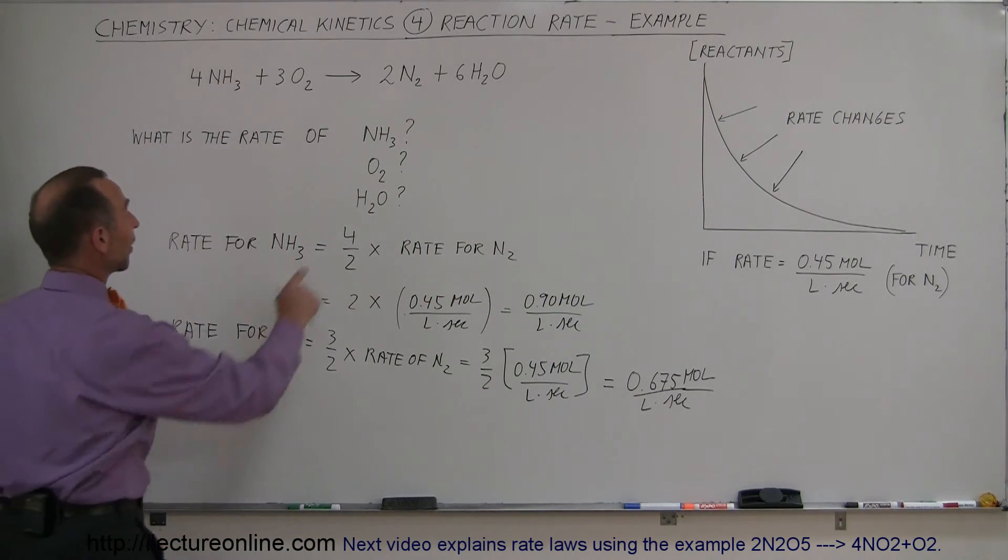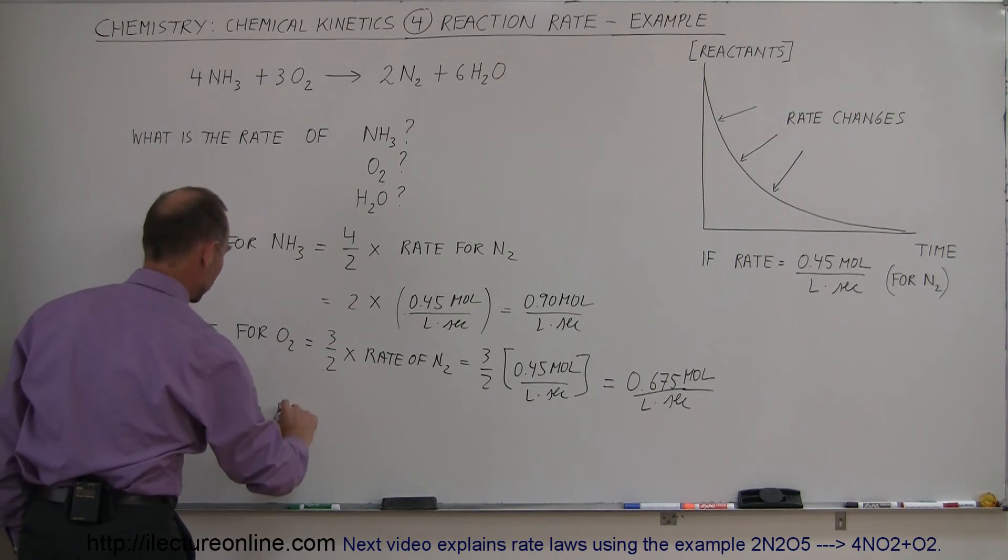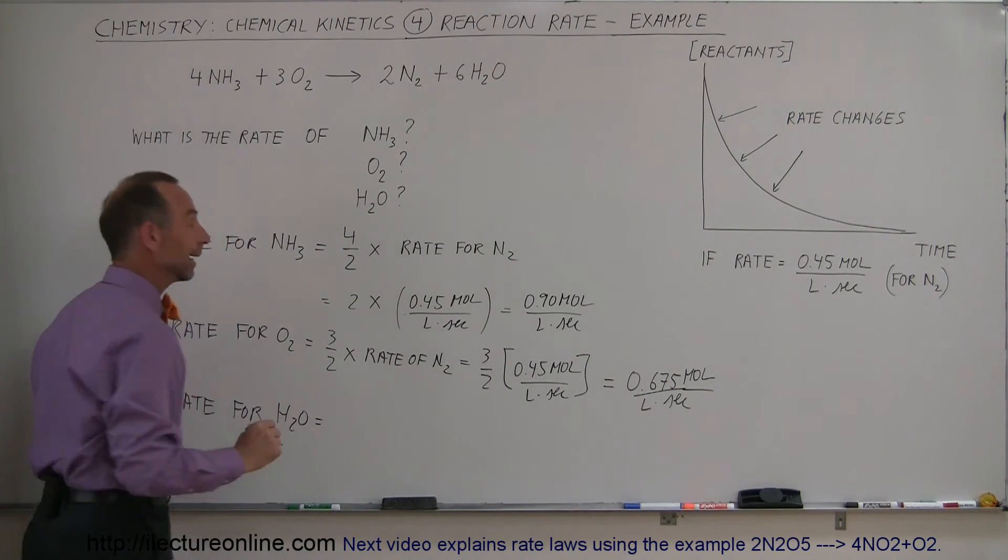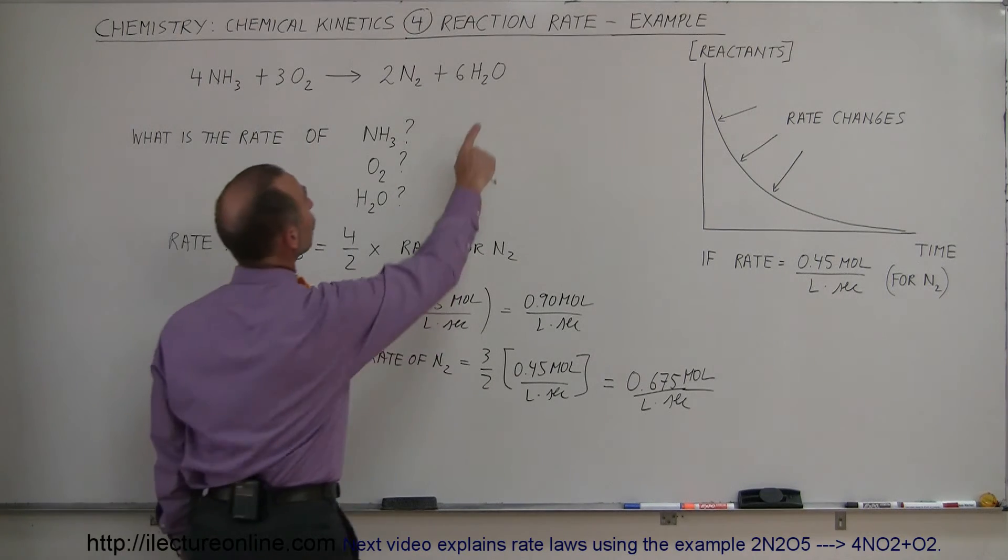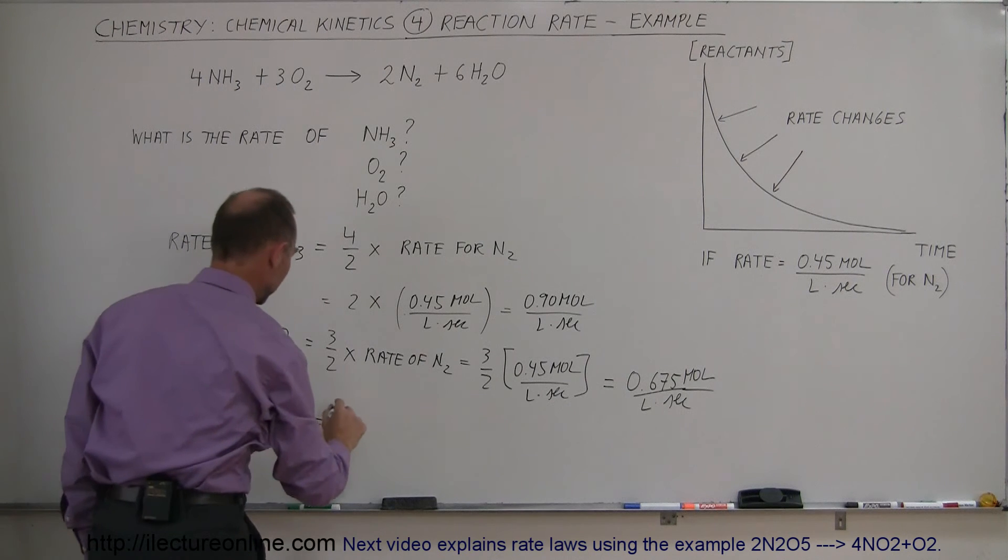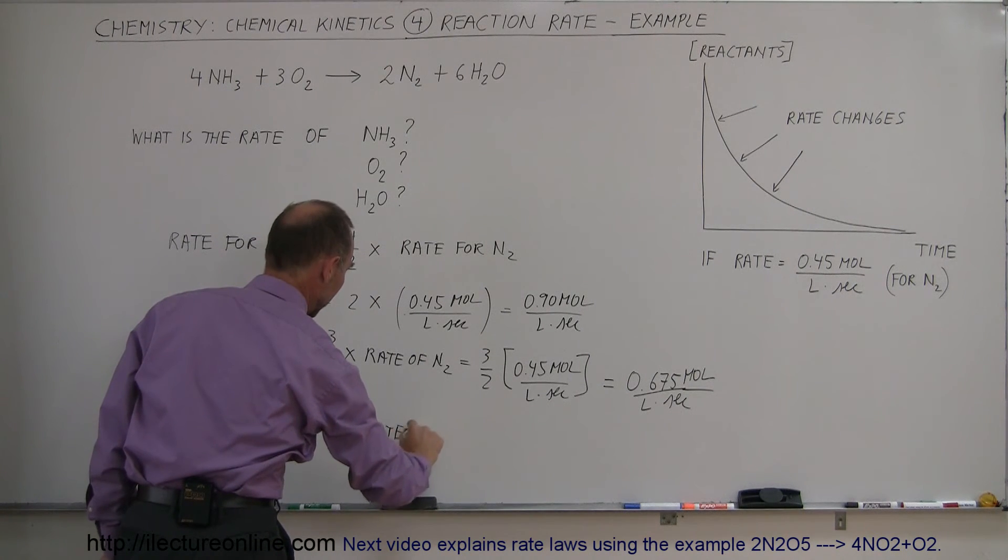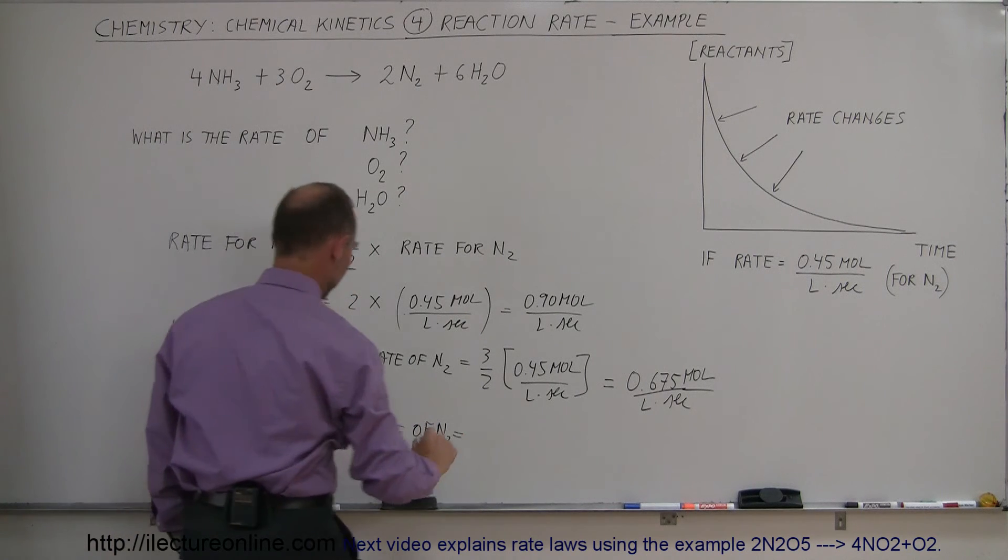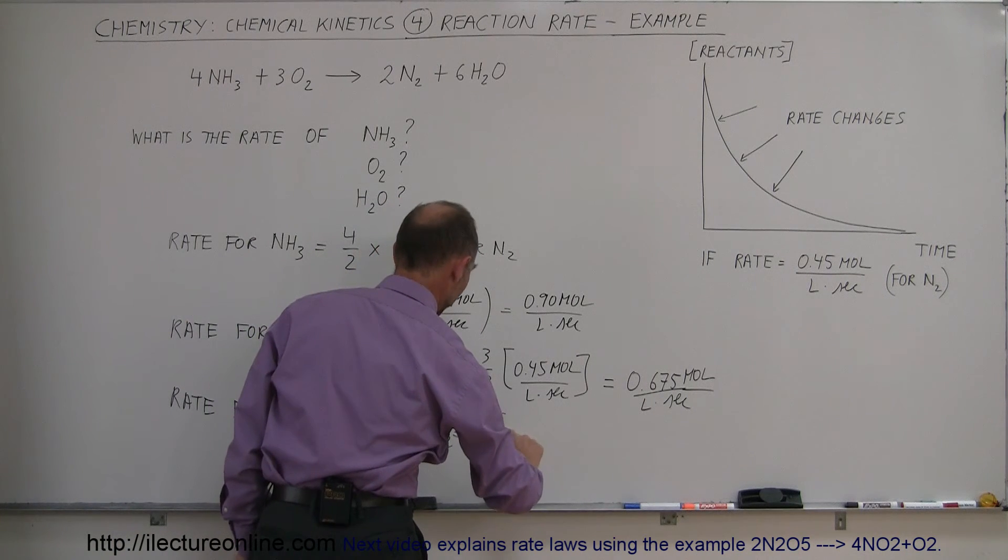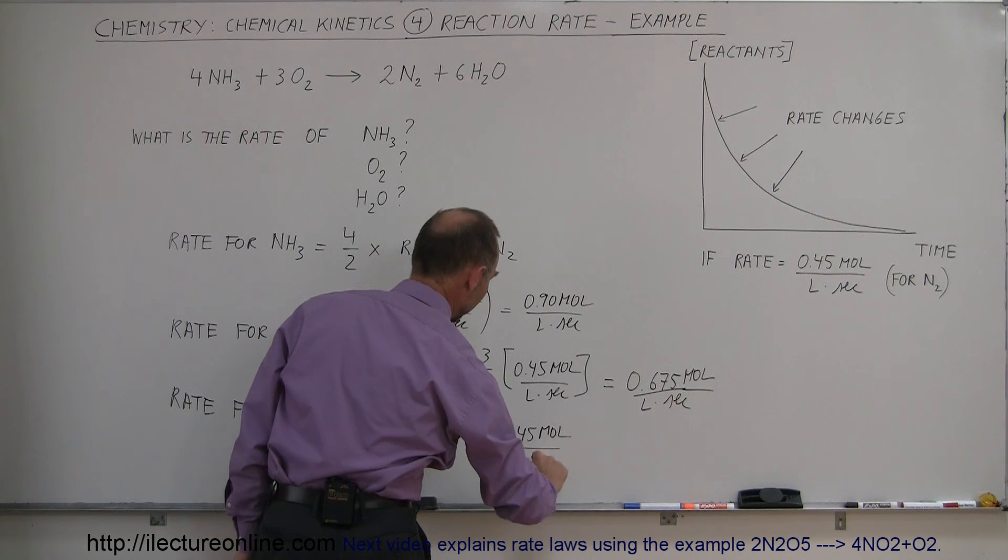And now finally, to find the reaction rate for the water. So rate for H2O is equal to, again the ratio is, we're going to produce 6 moles of water while we produce 2 moles of nitrogen. So the ratio is 6 to 2 times the rate of the nitrogen gas. In this case, it's going to be 3 times 0.45 moles per liter times seconds.